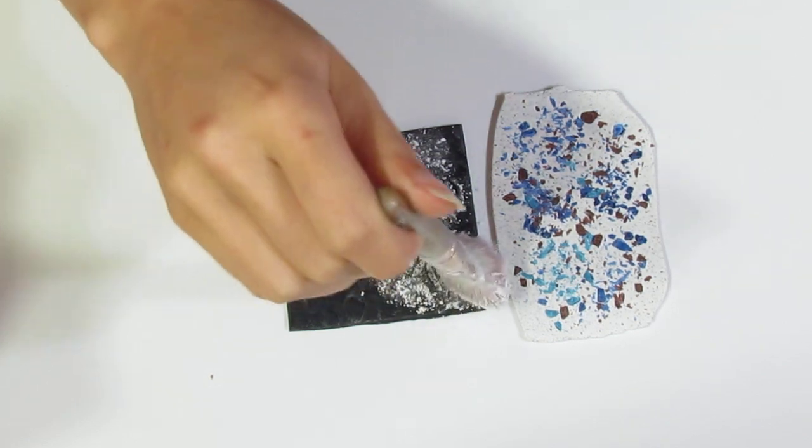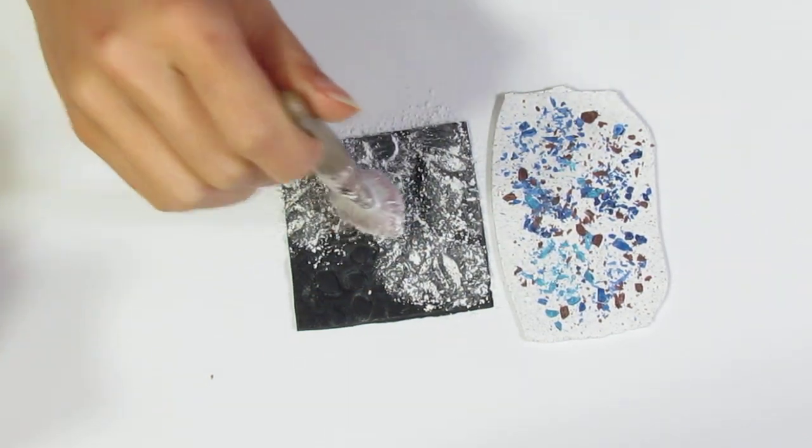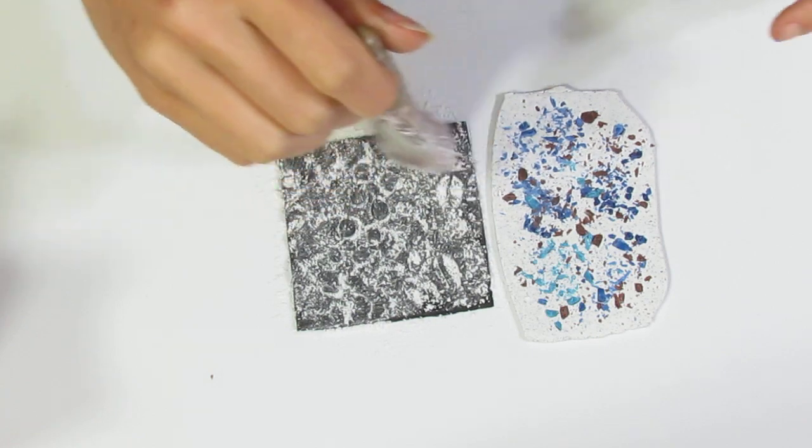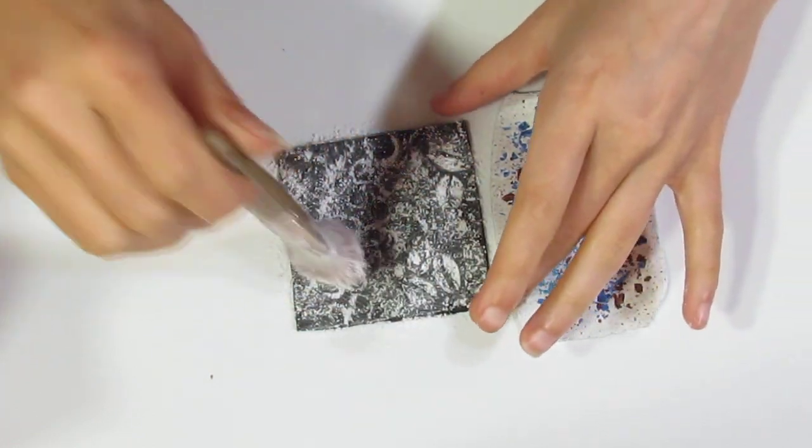And I'm just going to tap that over the stamp. Like so. I'm not going to put it on the clay, you can if you want, but I'll just do the stamp. And I'm just going to blow to get rid of most of the excess.